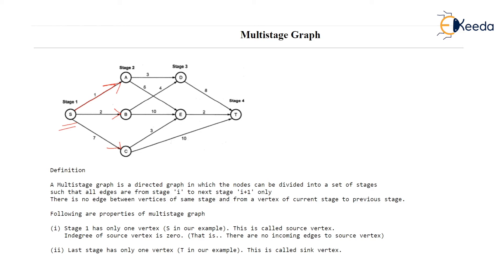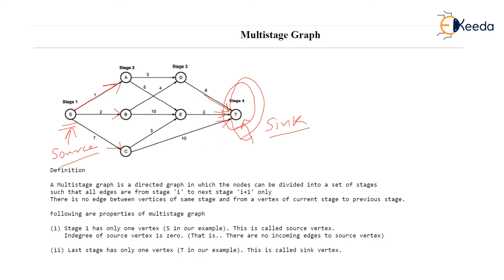And one more property: the last stage contains only one vertex, and this vertex only has incoming edges — all edges are coming into it with no outgoing edges. So the out-degree of this vertex T is 0, and the in-degree of source vertex S is 0. We call this last-stage vertex the sink vertex, and the first-stage vertex the source vertex. These are the properties of a multi-stage graph, which is why we label it with this special name, although it is nothing but a weighted directed graph.